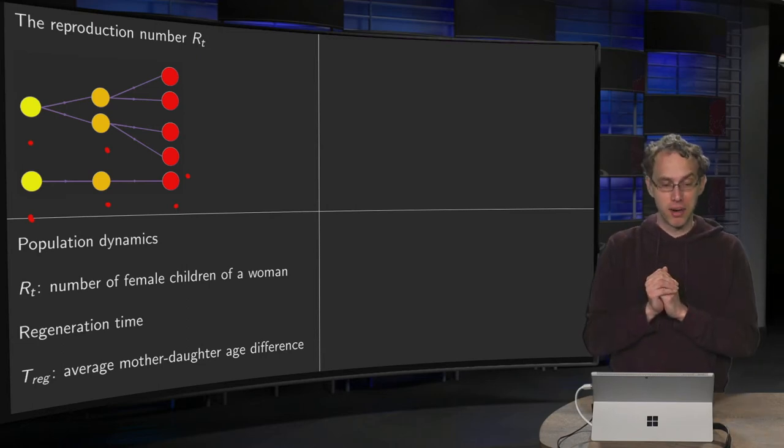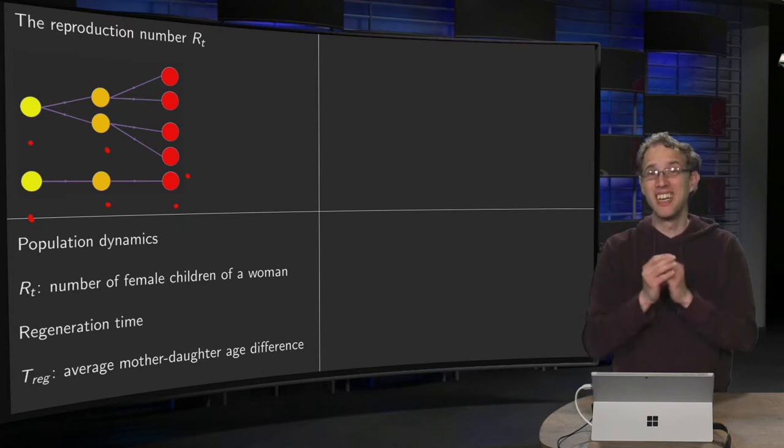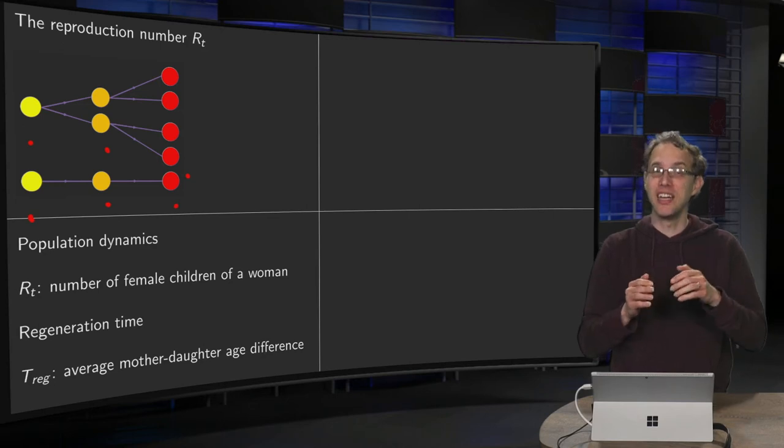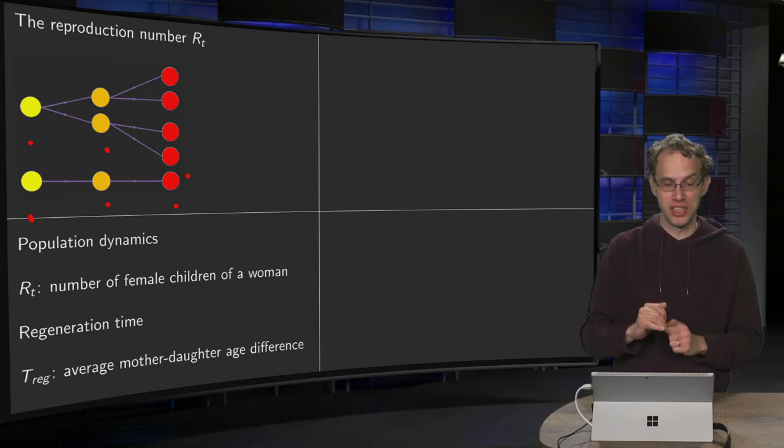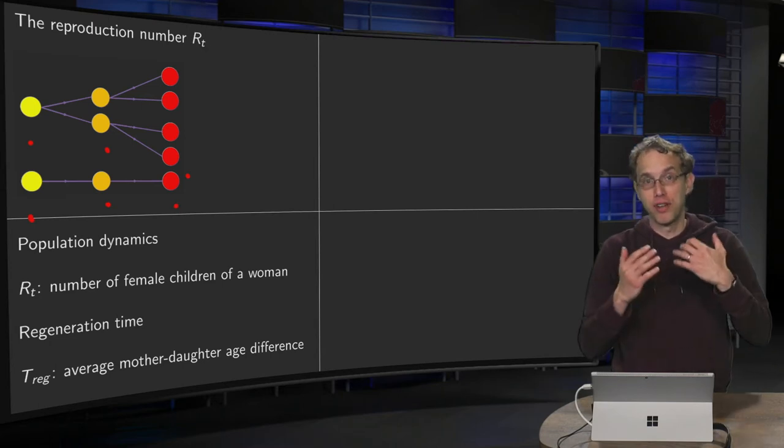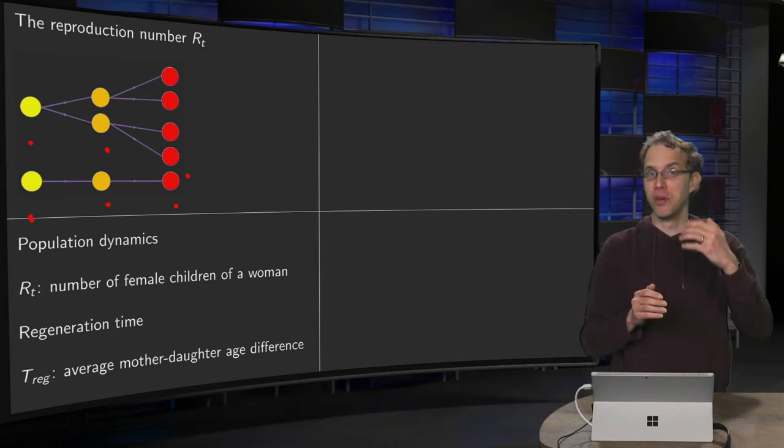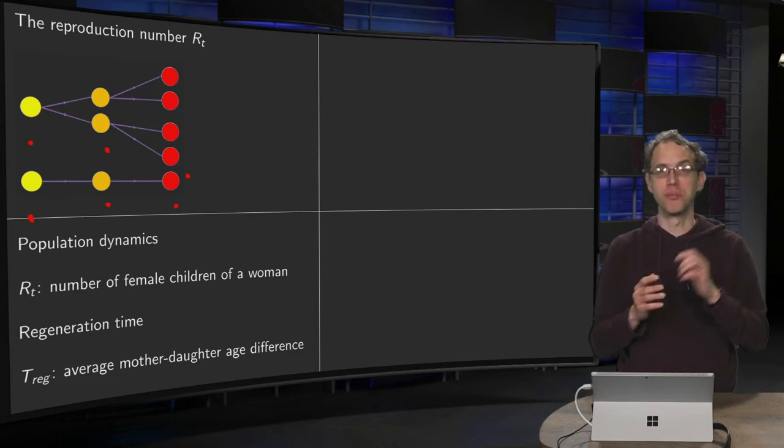Now, this reproduction number is not all of the story. You also need the so-called regeneration time. Regeneration time is the average time between generations. So the average mother-daughter age difference will be like 25 years, 30 years, something like that.